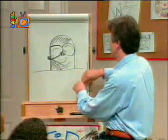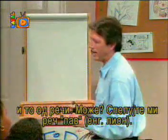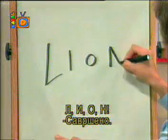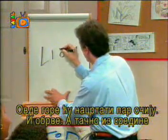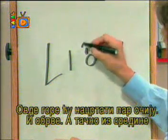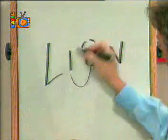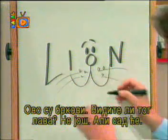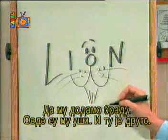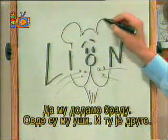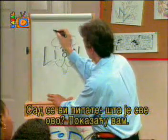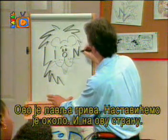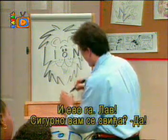Now this next one, we're going to do another animal from the word. Spell lion with me — ready? L-I-O-N. Right up here, I'm going to draw a couple eyes and an eyebrow. Right out of that O circle, one line going there, one line going there, and these circles are whiskers. Let's give them a chin with a little beard, some ears, another one right there. This is the lion's mane — we just continue that around and go down this side. And there it is — the lion!